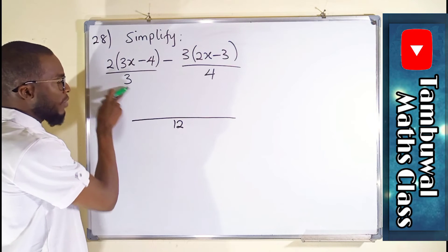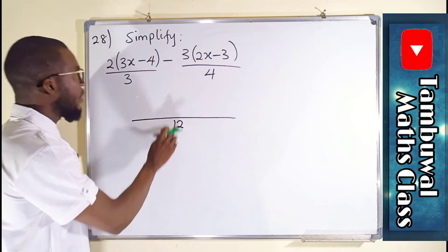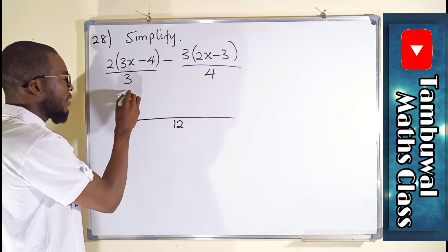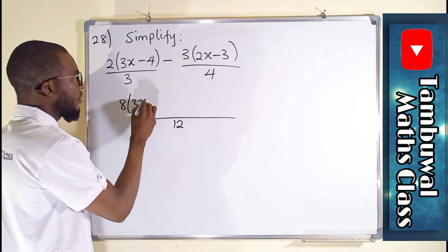Set this number, plug it in here. It can go into here 4 times, then multiply by this. So we have 4 times 2 is 8, 3x minus 4.